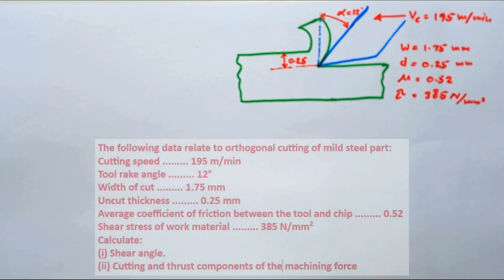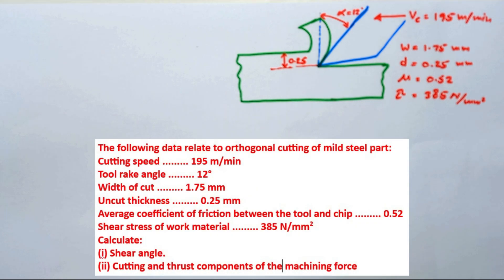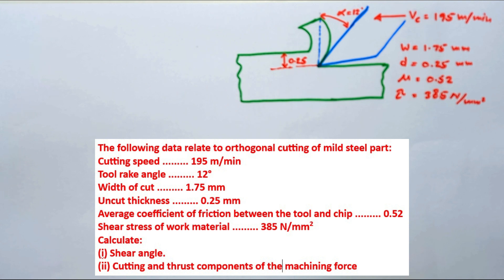In this problem, the following data are related to orthogonal cutting of mild steel parts. Cutting speed is given as 195 meters per minute. Tool rake angle is 12 degrees. Width of cut is 1.75 mm. Uncut chip thickness is 0.25 mm. Average coefficient of friction between the tool and the chip is given.